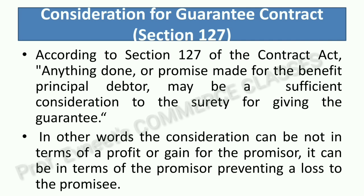Next is consideration for a guarantee contract. Section 127 of the Indian Contract Act says: 'Anything done or any promise made for the benefit of the principal debtor may be sufficient consideration for the surety for giving the guarantee.' So the surety is giving a guarantee for the principal debtor — in return, the surety does not need any monetary benefit. Whatever benefits the principal debtor is itself the consideration for the surety. Consideration does not always have to be in the form of profit or monetary gain — it can also be saving the promisee from a loss.